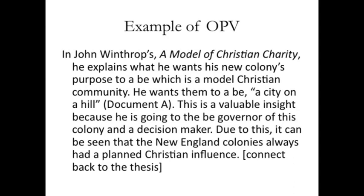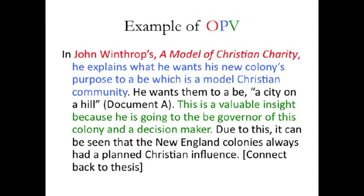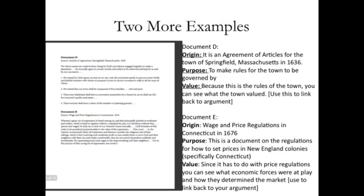That is how I want you to put your OPVs in — it should be a natural inclusion into your argument. You should then link this back to your thesis, explaining why it relates to your argument. I've added color so you can see where origin, purpose, and value are each placed. I've also done OPVs for documents D and E that you can use. The biggest thing: after you state your value, you have to link it back to the argument. You have to take the document and use it to prove your thesis — what is your thesis stating and how are you able to prove it?